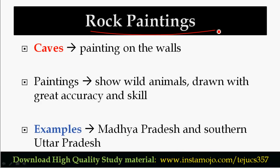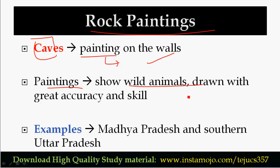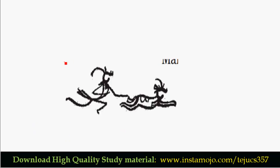The next important topic is rock paintings. Earliest people used caves as shelter, and on cave walls there are paintings. These cave wall paintings were used to share knowledge and plan hunting strategies. Rock paintings generally depict wild animals and hunting strategies that were planned and communicated through these images.